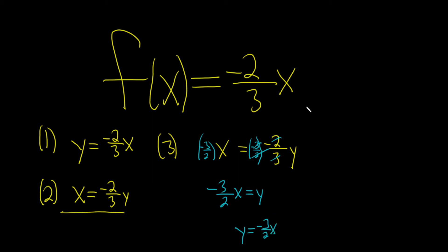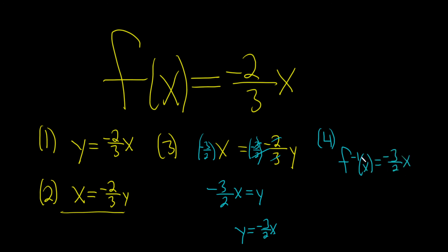The last step would be to write it using the correct notation. So f inverse of x is equal to negative 3 over 2 times x. And that would be the final answer.